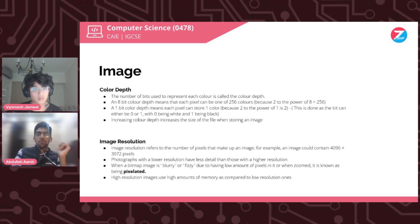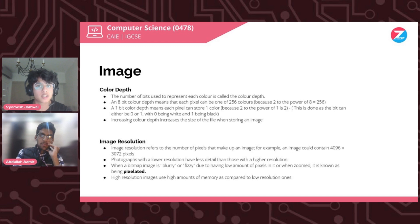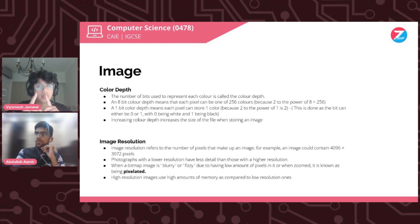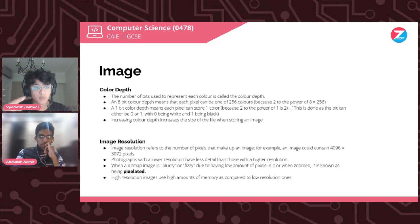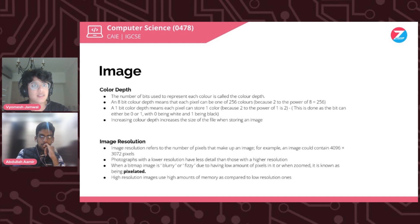The same memory trade-off applies to images as to sound. You can get exam questions asking whether you should increase or decrease resolution given memory constraints. Also, remember for color depth calculations: if there are 3 bits per color, the number of possible colors is 2 to the power 3. With 2 bits, the combinations are 00, 01, 10, 11 — that's four combinations, so 2 to the power 2. So if an image has 16 colors, each pixel would be represented by 4 bits.